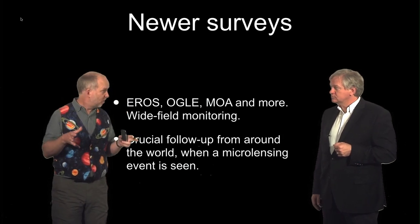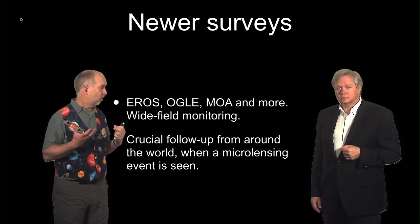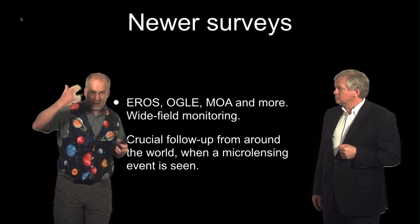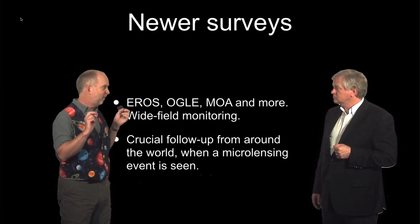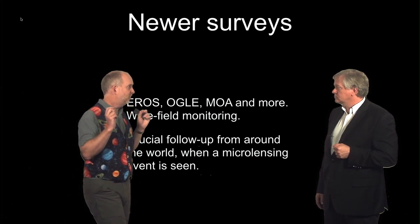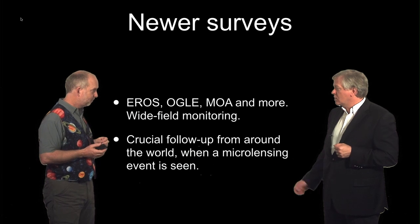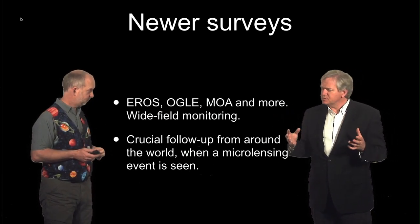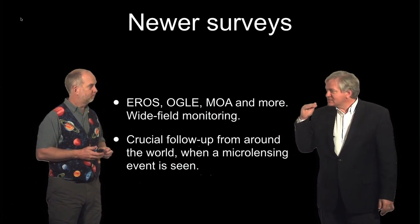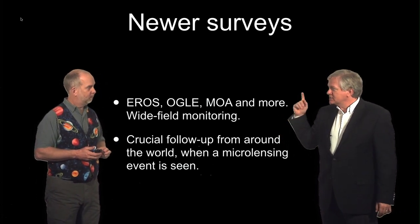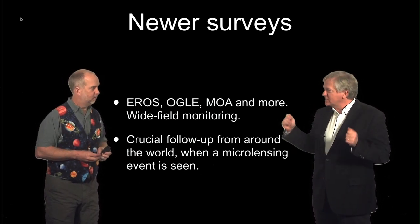These surveys have telescopes mapping large areas of the galactic bulge over and over again very rapidly, looking for stars that suddenly start getting brighter. Some stars vary in brightness all the time — you throw those out. What you want is a star that normally doesn't vary, and if that star suddenly starts getting brighter with just the right shape of curve — alarm! These groups have great software systems in place with many years of monitoring, so they can sound the alarm very quickly and tell everyone in the world that one of these magnification events is happening.